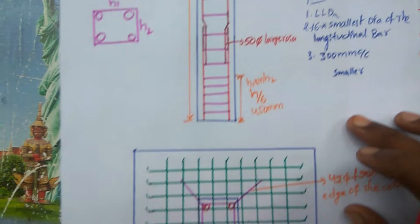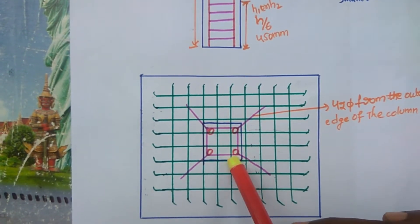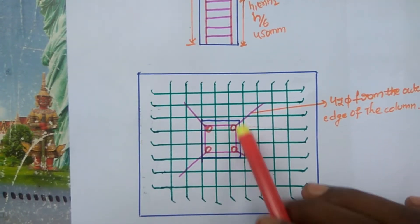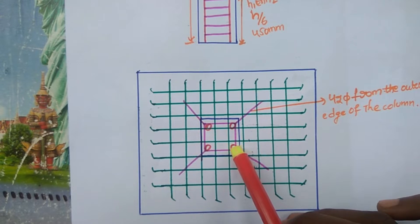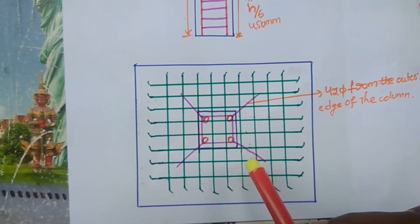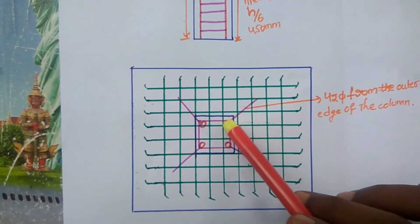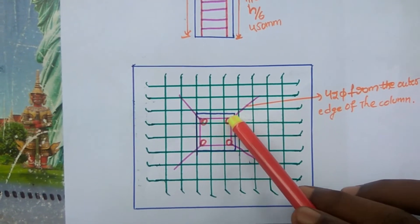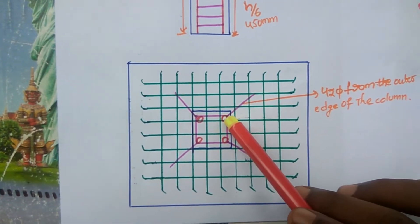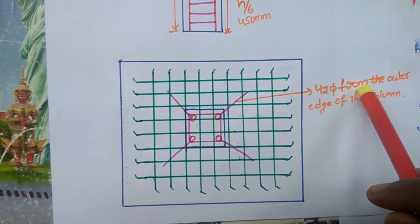Starting from the footing, the column is placed on the footing. The blue line is the cross section of the column, the red color represents the longitudinal bars, and this is the extension bar. The extension bar distance from the outer edge of the column to the end of the rod is 42 times the diameter.